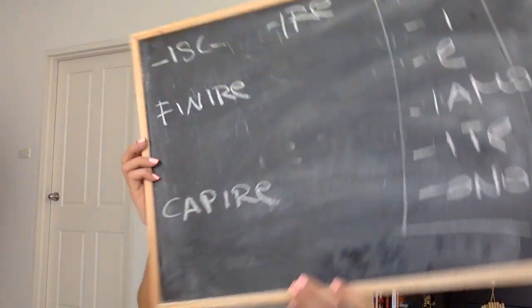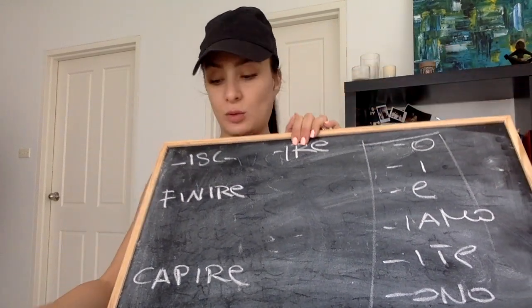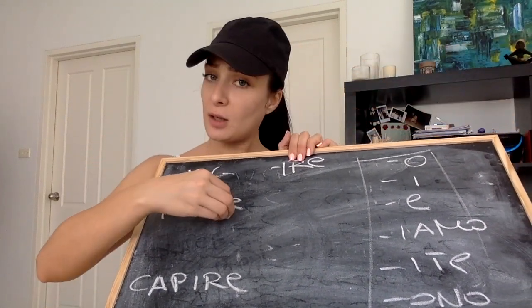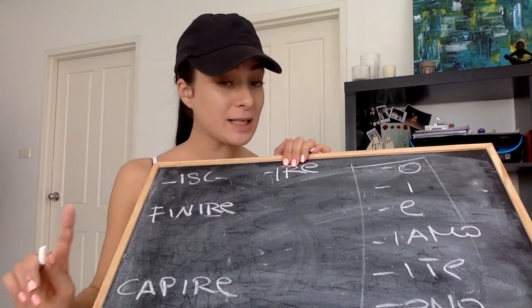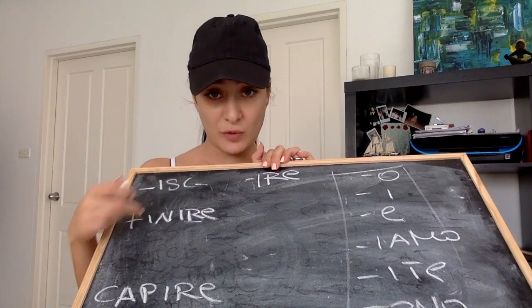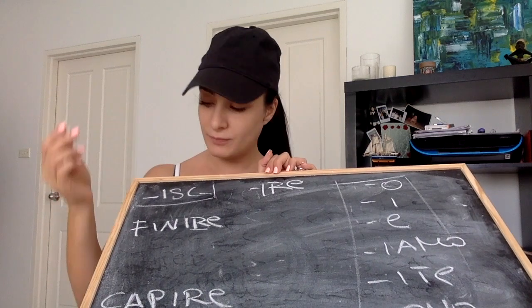The verb 'finire' — to finish — or 'capire' — to understand. Following the rules of conjugating a verb, we should get rid of the ending and add the standard endings. But these two verbs are different — we call them ISK verbs. That means these three letters — ISK — need to go in between the root of the word and the ending.